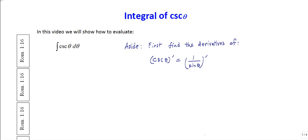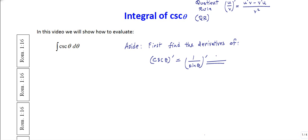Let's remind ourselves what the quotient rule is: when you have u over v and you're taking the derivative of that quotient, it's going to be u prime times v minus v prime times u, all over v squared. So applying that to cosecant, we get 1 prime times sine minus sine prime times 1, over sine squared.